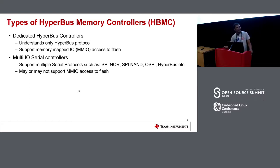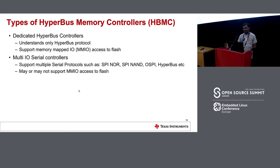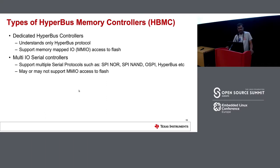Moving on to the different types of HyperBus controllers: there are two broad varieties. The first is dedicated HyperBus controllers which only understand HyperBus protocol and support memory-mapped access to the flash, where the entire flash can be accessed directly by the CPU as an SOC address. The second type is multi-IO serial controllers which support a wide variety of protocols such as SPI NOR, octal SPI, or even HyperBus.